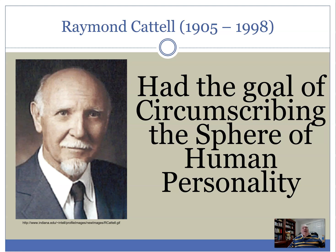Cattell started with Allport and Odbert's list of stable, trait-descriptive adjectives, literally wrote them all on index cards, taped them to the wall of his basement at his home in Champaign, and started to group them logically into different clusters. He went through a long process of winnowing the thousands of words down into different groups. Eventually he came up with a 16-trait model of personality, and then started doing research and collecting data.